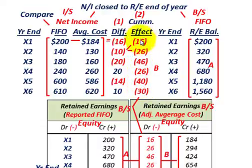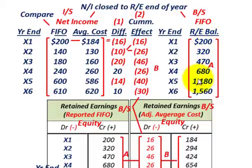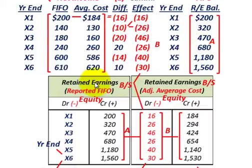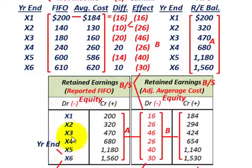By using the average cost method over these six years, we have a cumulative effect of negative $30,000 flowing to net income, and this net income amount gets closed to retained earnings. Here's the retained earnings balance using FIFO that we have to convert over, adjusted for the average cost method retrospectively over these six years, to get to the beginning of year X7. This is laid out in T-account form.